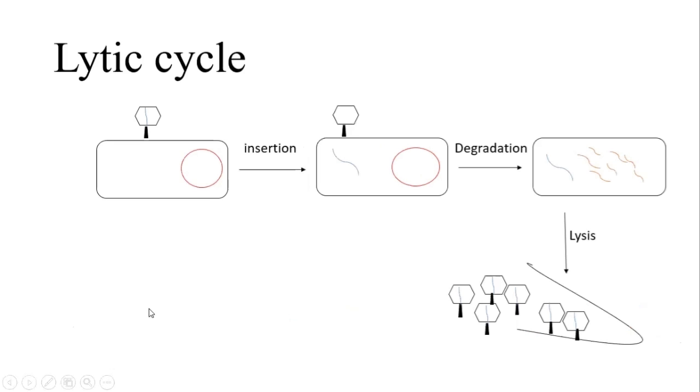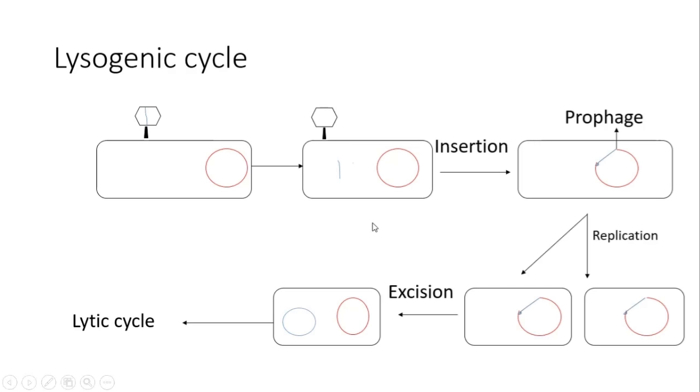The major difference between the lytic cycle and the lysogenic cycle is that in the lytic cycle, the host cell dies at the end of the process, whereas in the lysogenic cycle, the host cell remains alive.